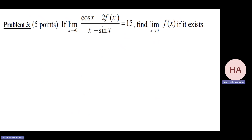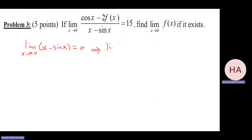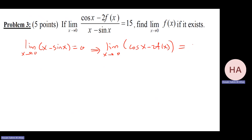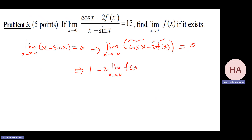This limit exists; checking the limit of the new denominator is clearly zero. That means the limit of the numerator should also be zero. All limits of the differences exist, so the limit exists. Setting up: cosine of zero is one, so one minus two times the limit as x goes to zero of f of x equals zero, giving limit of f of x equals one-half.